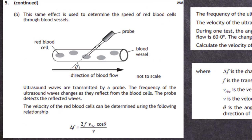The effect is used to determine the speed of red blood cells through blood vessels. The diagram shows that probe is at an angle to the direction of flow. Ultrasound waves are transmitted by a probe. The frequency changes as they reflect from the blood cells and the probe detects the reflected waves.